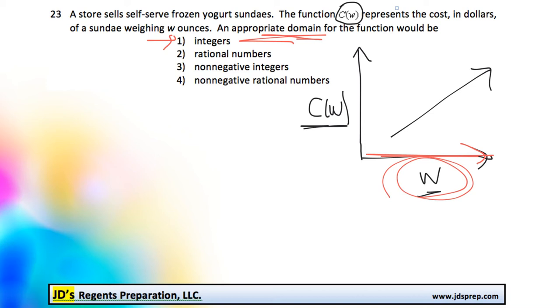Does integers make sense? Well, integers doesn't make sense because that implies that there's negative numbers, right? And we can't have a negative weight of anything. So that rules out integers.